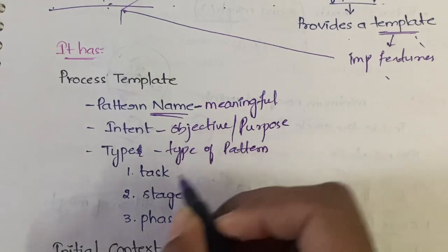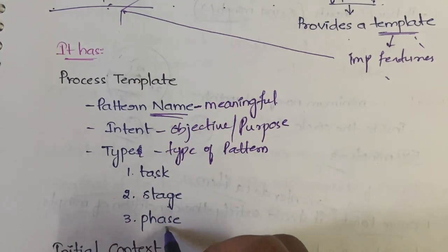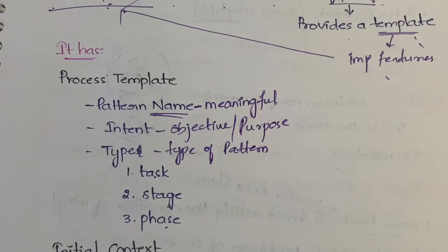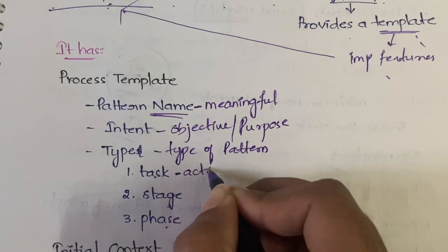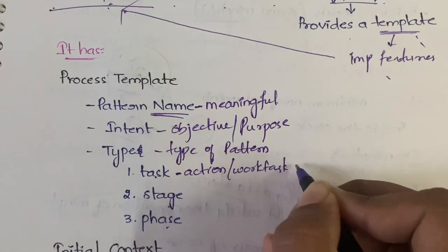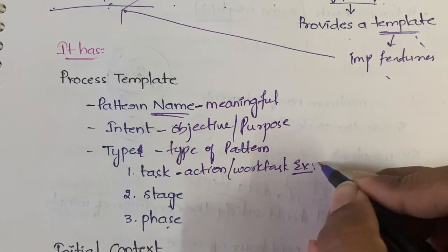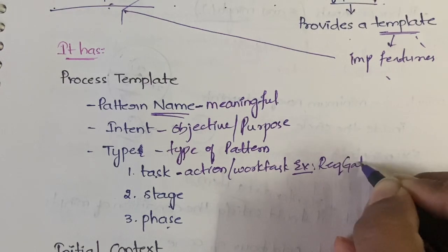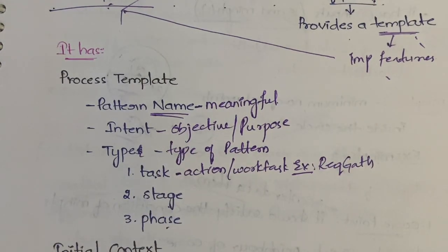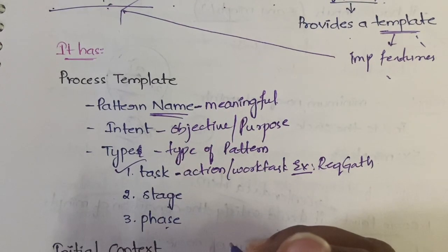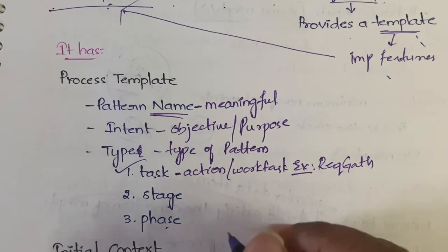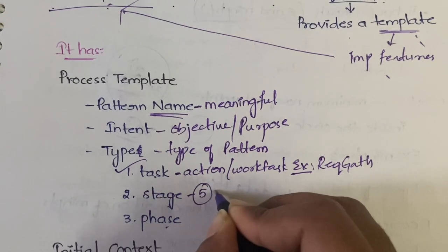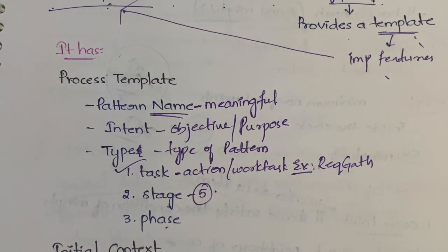Patterns are of three types: task, stage, and phase. Task is nothing but an action or a work task — for example, requirements gathering is a task. If the pattern is related to doing an action or defining a work task, it comes under task. Stage means it defines the framework activity — which of the five framework activities you are in. For example, communication is a stage.